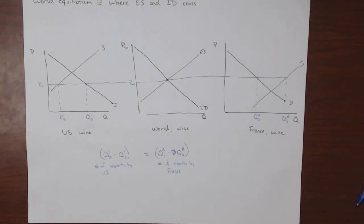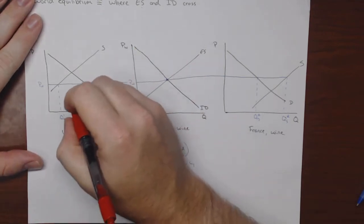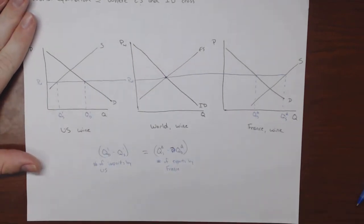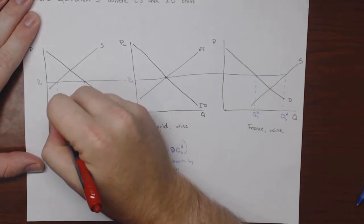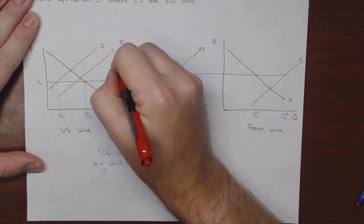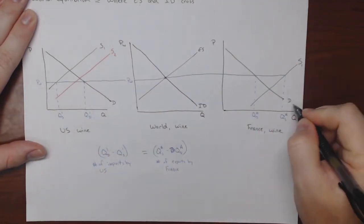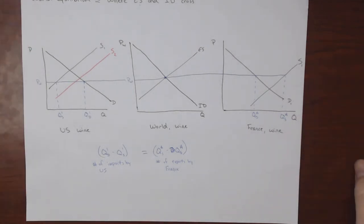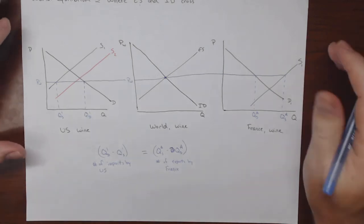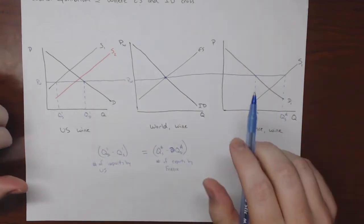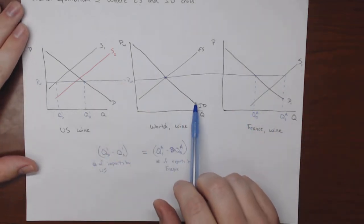Let's think about what will happen if the U.S. suddenly becomes more productive at producing wine. We would illustrate that by shifting the U.S. supply curve to the right. The question becomes: what will this do to the United States import demand curve?